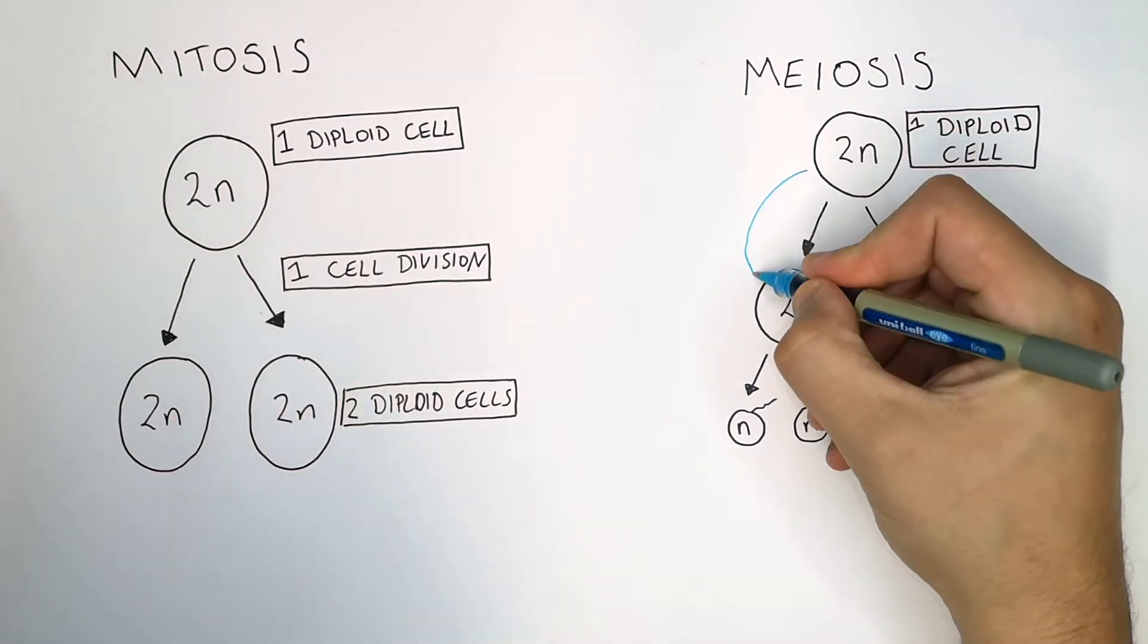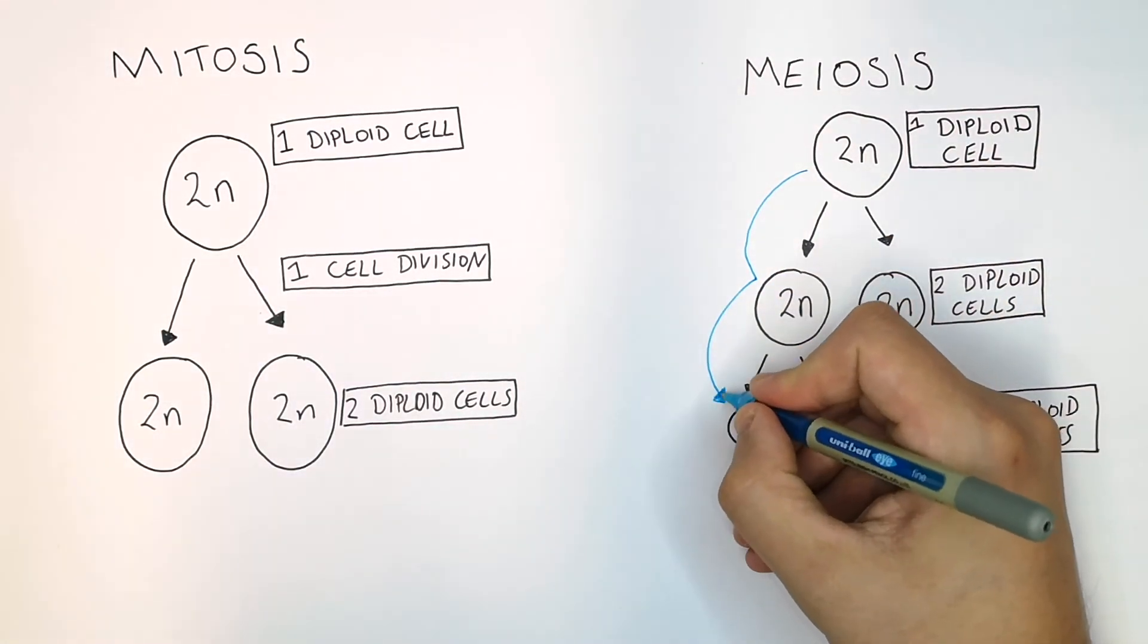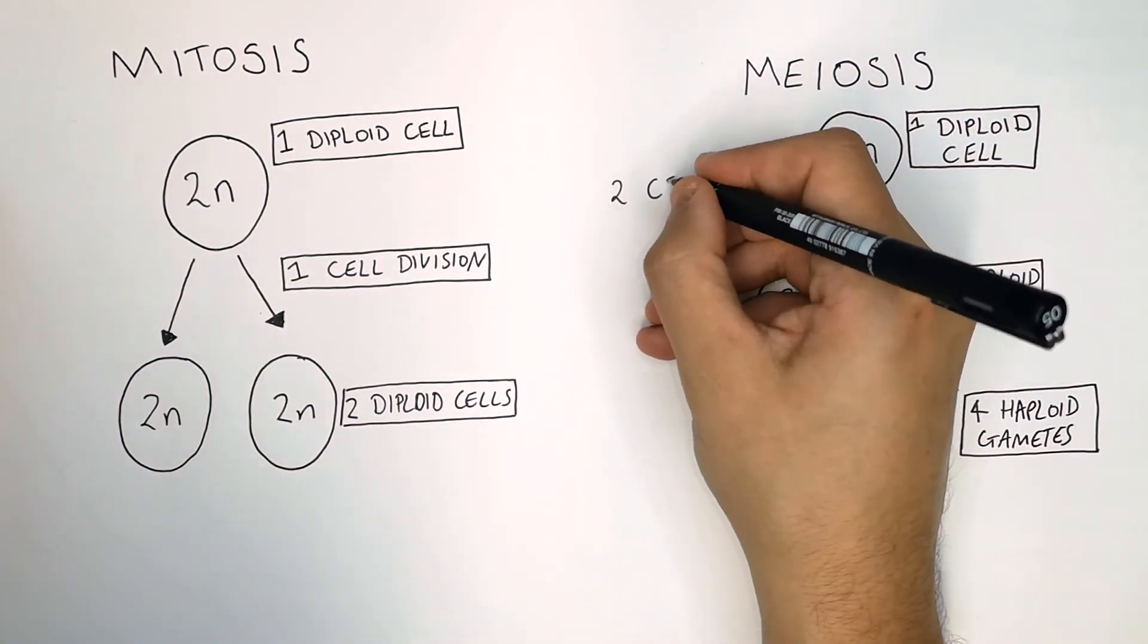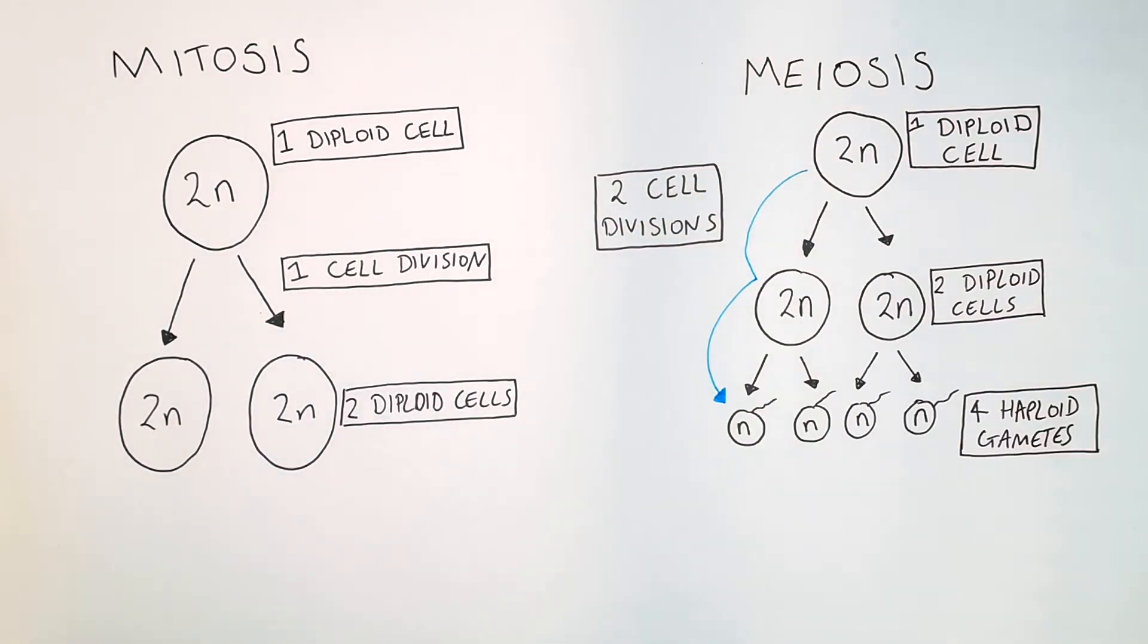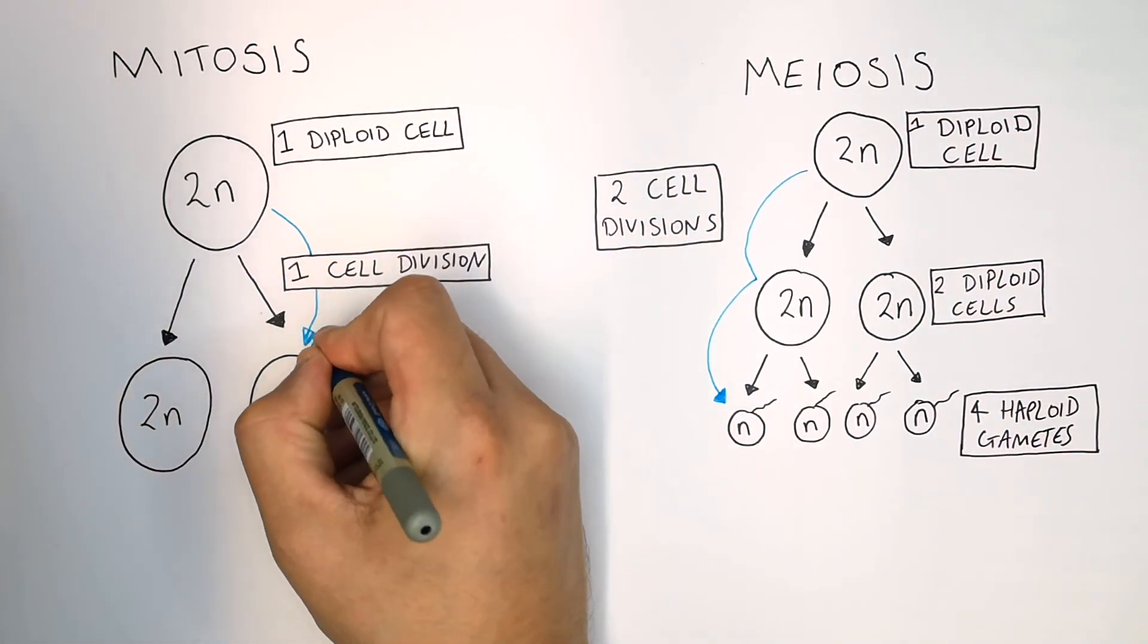So it divides once to begin with and then a second time. So there are going to be two cell divisions in meiosis, two cell divisions in meiosis compared to one cell division in mitosis.